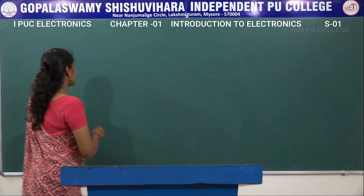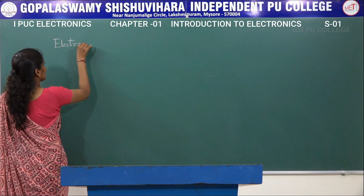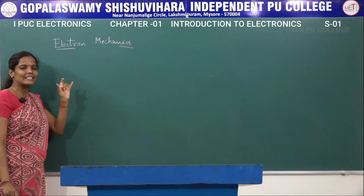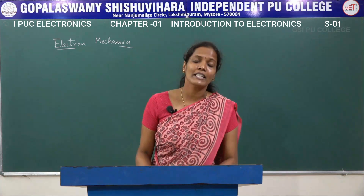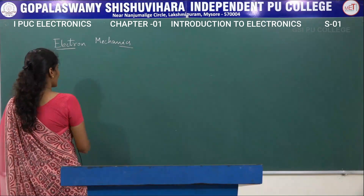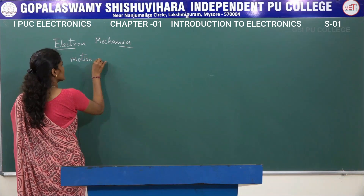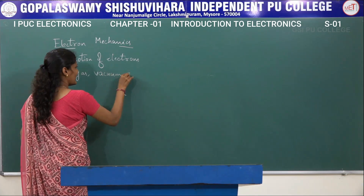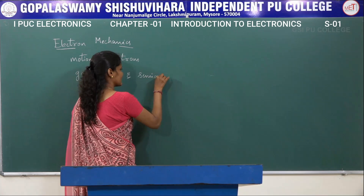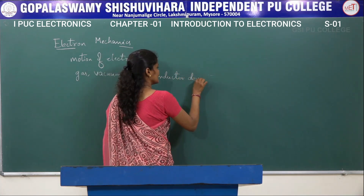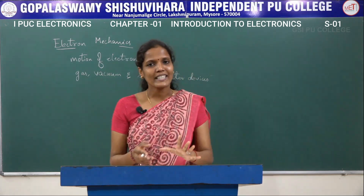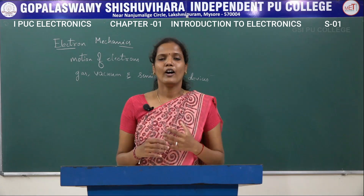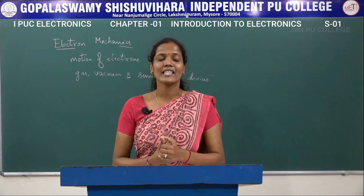Electronics is derived from the word 'electron mechanics.' Electronics is nothing but the science and technology which deals with the study of motion of electrons — the motion of electrons in gas, vacuum, and semiconductor devices. It is all about how electrons behave or move from one place to another in gas, vacuum, or semiconductor devices, which serves as the base for electrical signals.